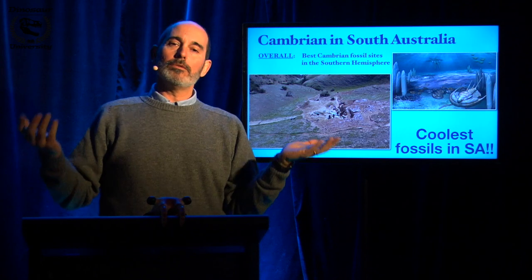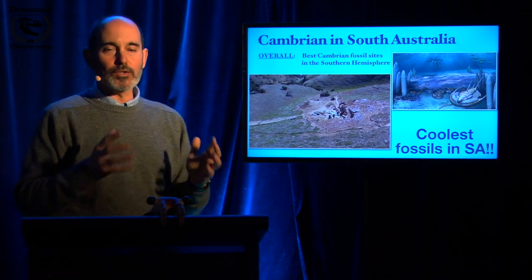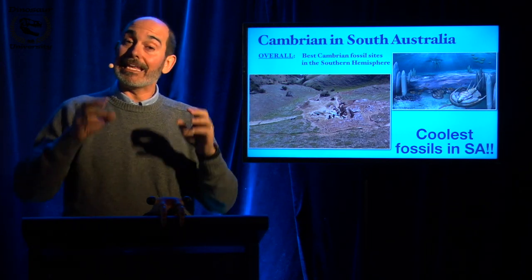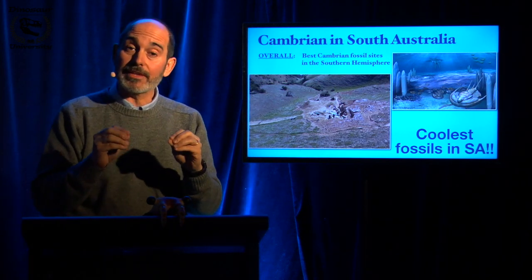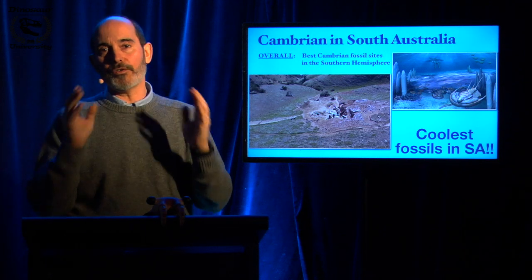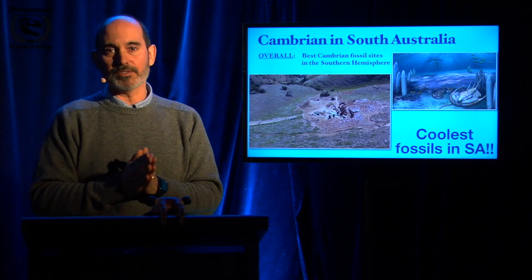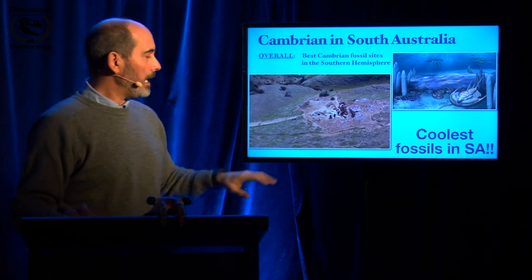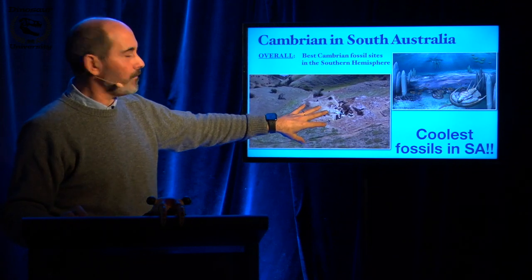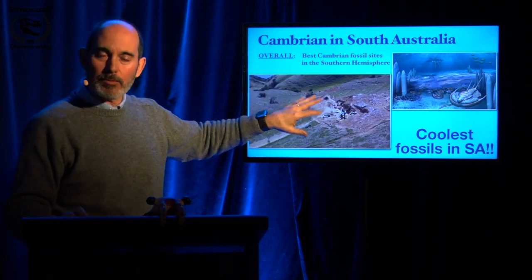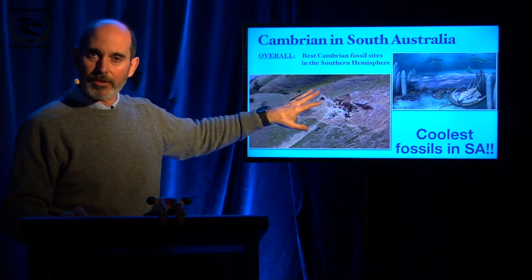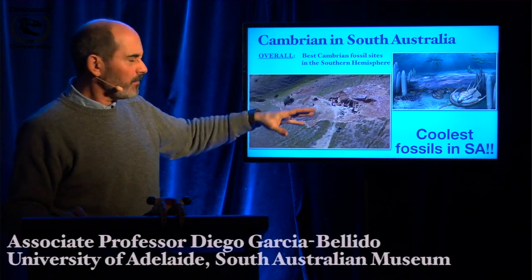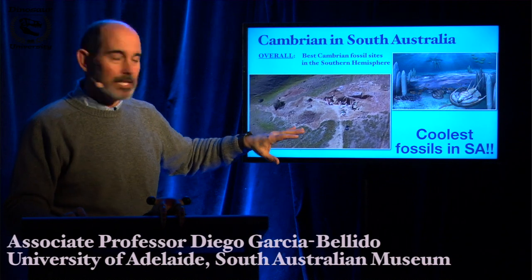Overall, we've got some of the best fossils in Australia, and in particular during the Cambrian, we've got the best fossil site in all of the Southern Hemisphere. This is our fossil site — the Emu Bay Shale on the north coast of Kangaroo Island. It's about 512 million years old.